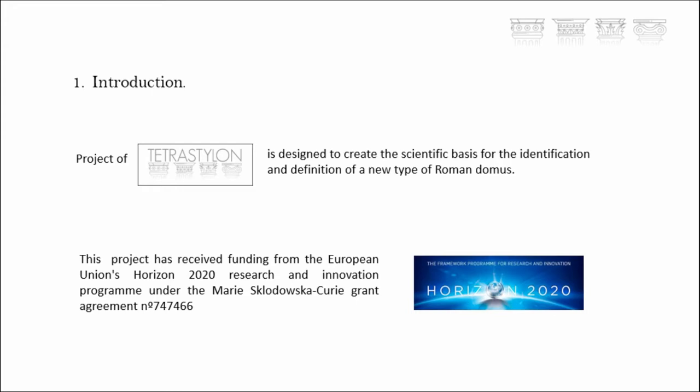This project, which is financed by the European Commission, is called Tetrastir, and the project wants to create the scientific basis for identification and definition of a specific and particular type of Roman house — this Domus.